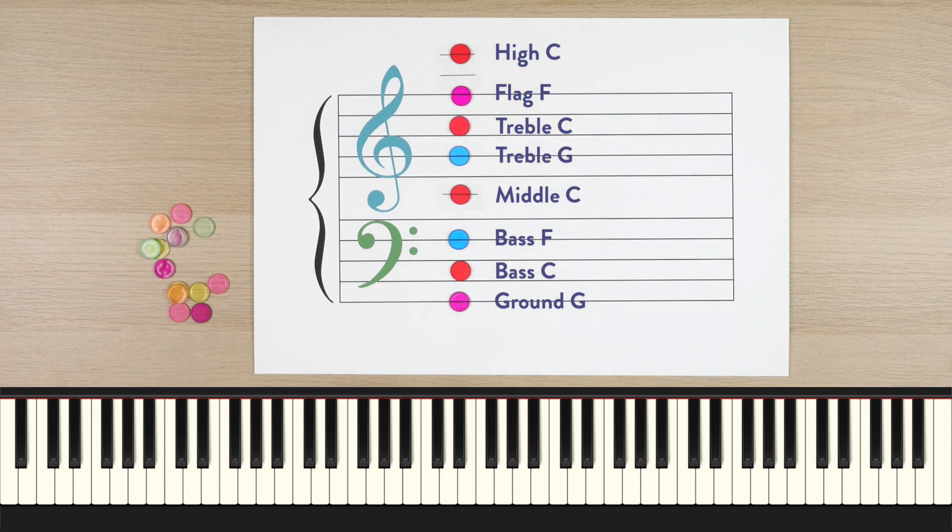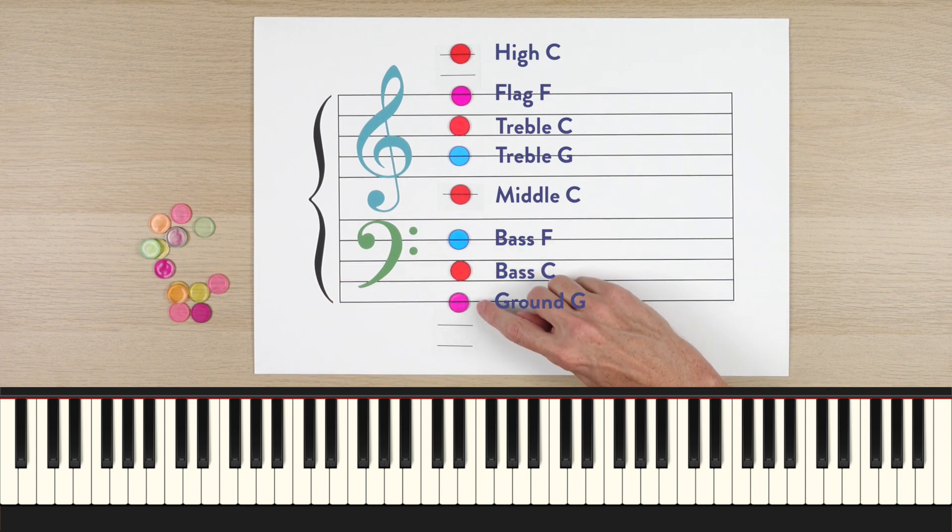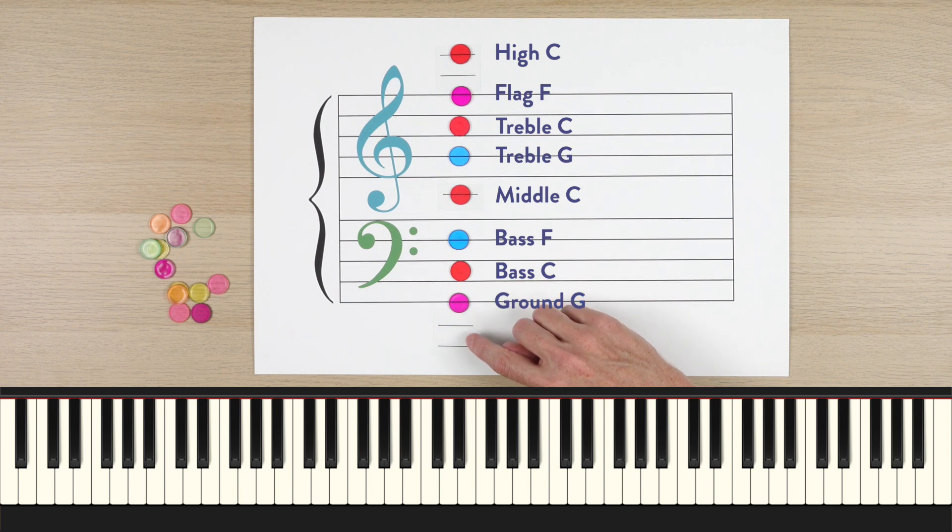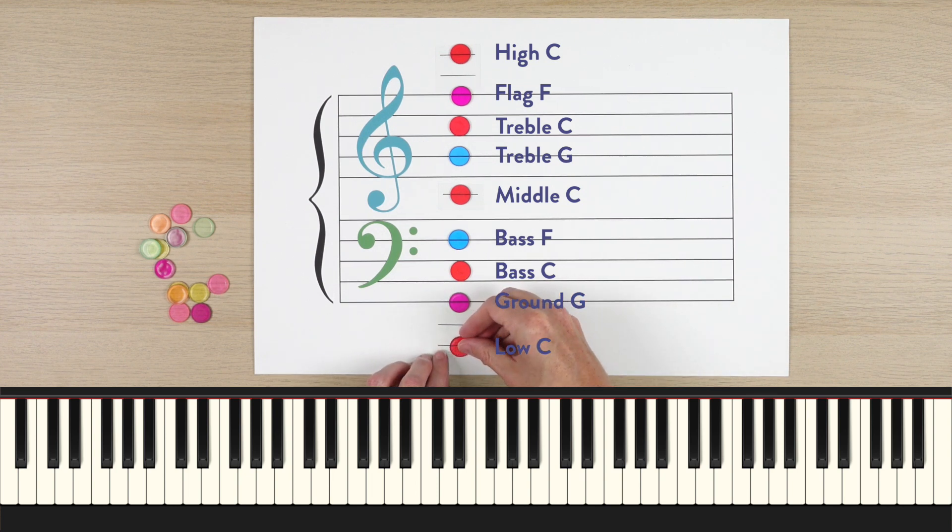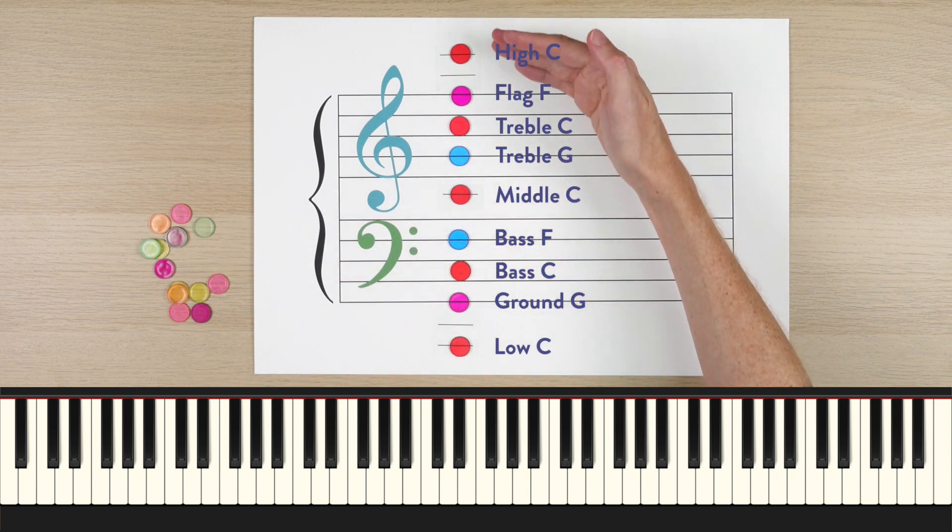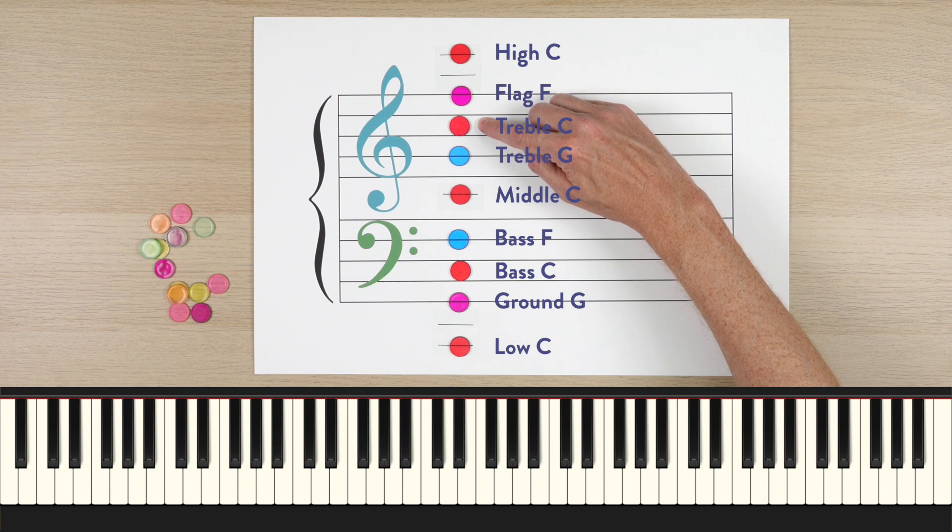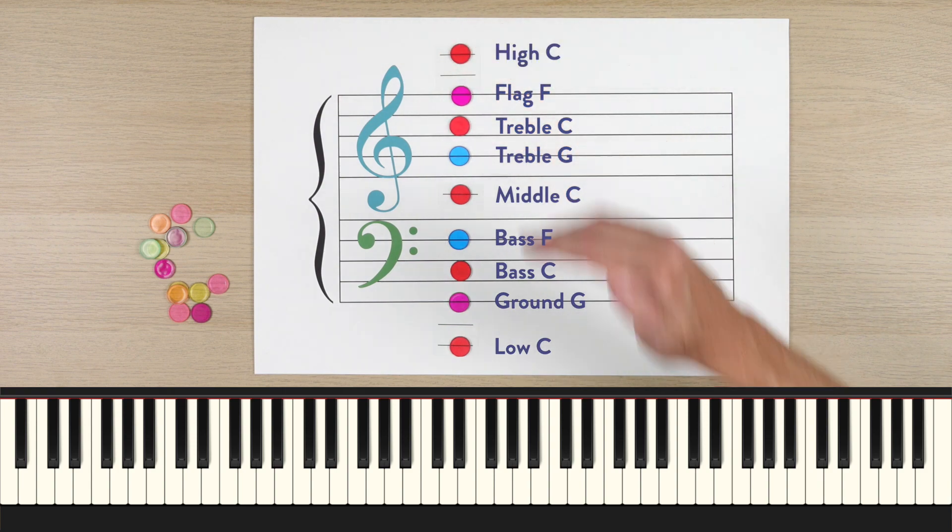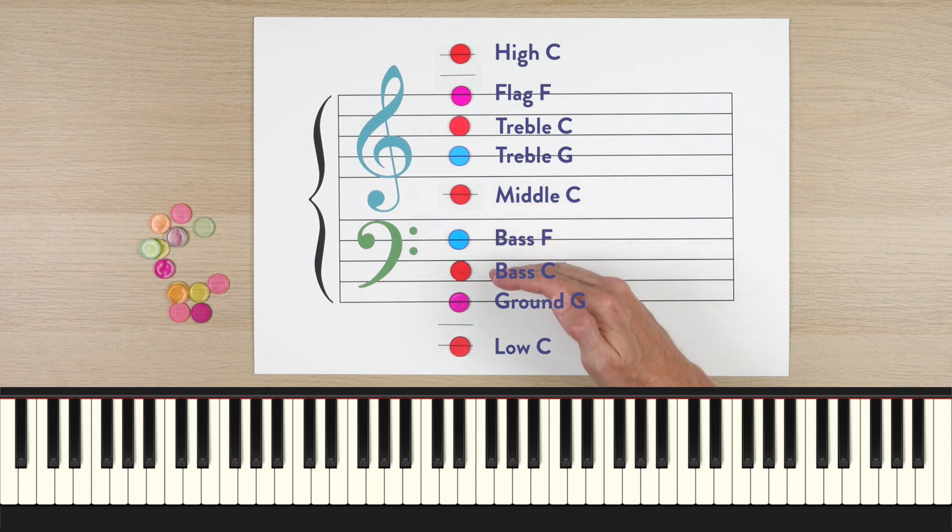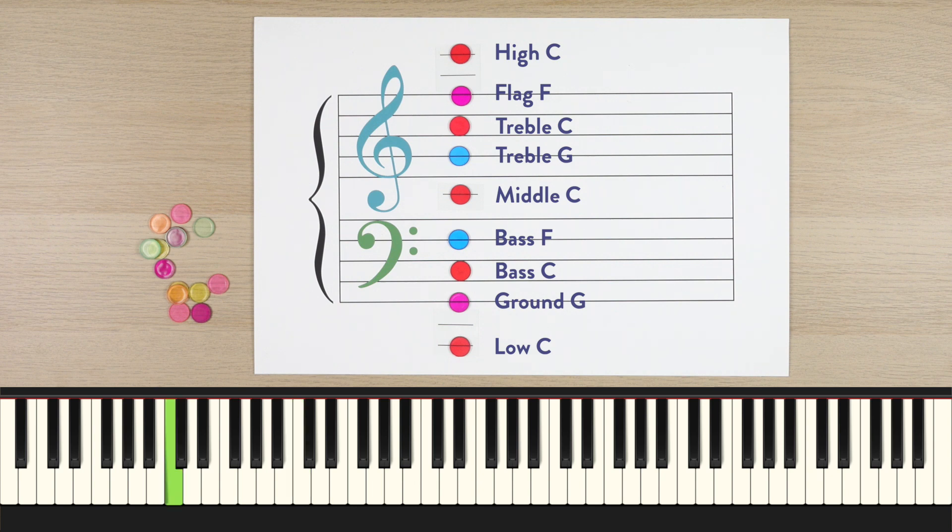Now what if we wanted to go down? We can add two ledger lines here, and let's count down from G. G steps down to F, steps down to E, steps down to D, steps down to C. So notice how this symmetrical pattern continues. We can go up three spaces to get to treble C, and then two more ledger lines to get way up to high C, going down three spaces to get to bass C, and then two ledger lines below the staff get us all the way down to low C.